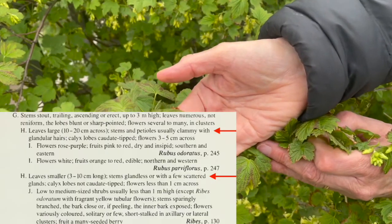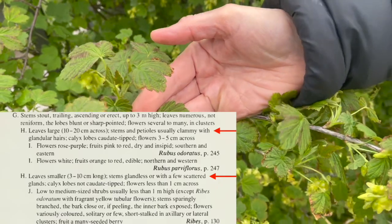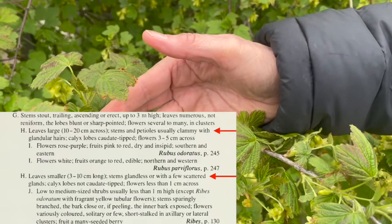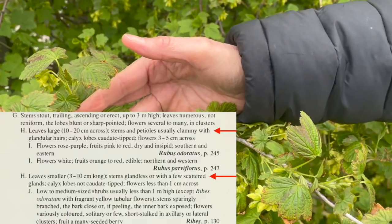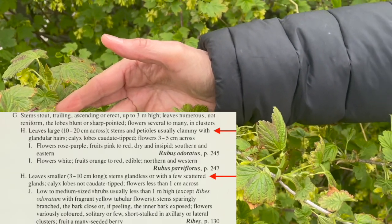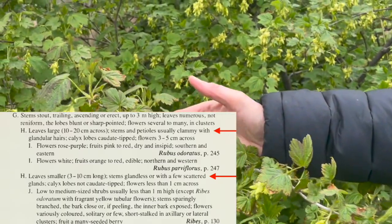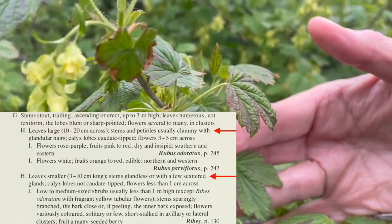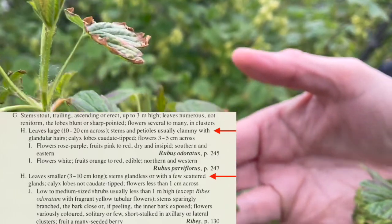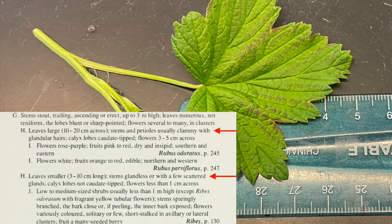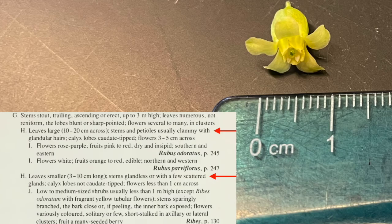Option H: leaves large, 10 to 20 centimeters across, stems and petioles usually clammy with glandular hairs, calyx lobes caudate tipped, flowers 3 to 5 centimeters across. Or H: leaves smaller, 3 to 10 centimeters long, stems glandless or with a few scattered glands, calyx lobes not caudate tipped, flowers less than 1 centimeter across. Here you can see the leaves are less than 10 centimeters long and the flowers are less than 1 centimeter across, so we will go with the second option, H.